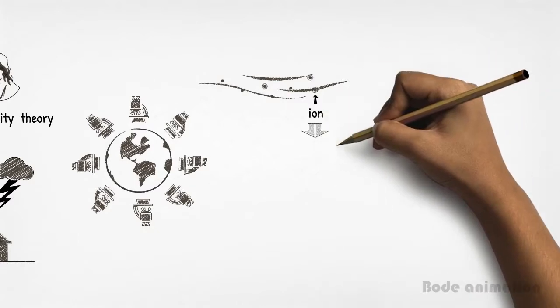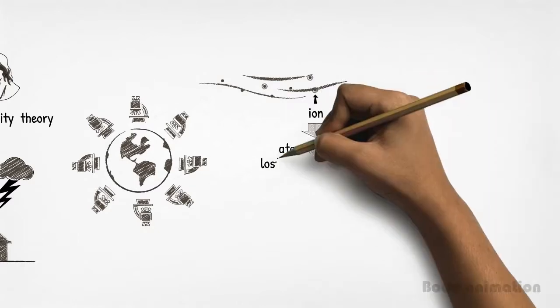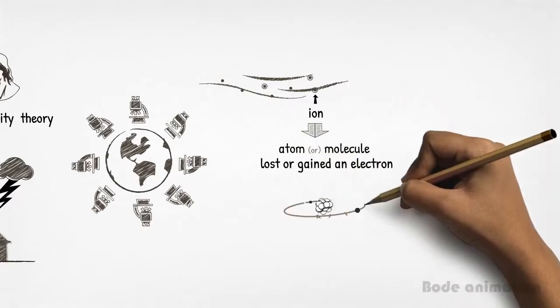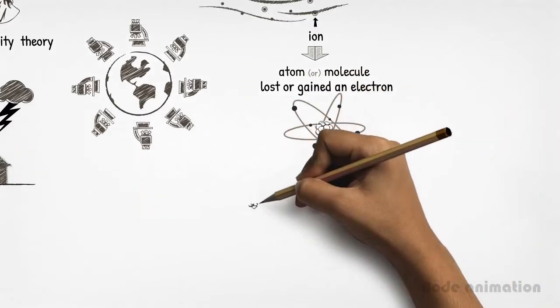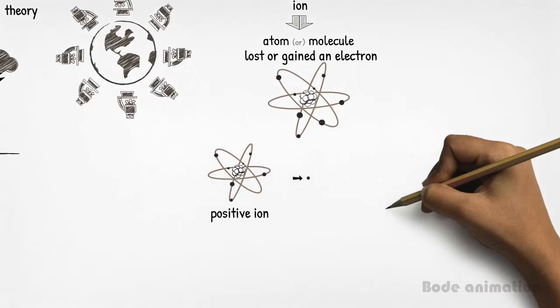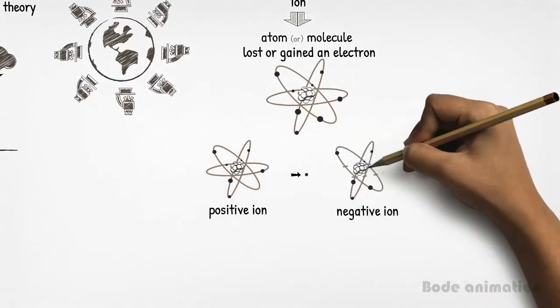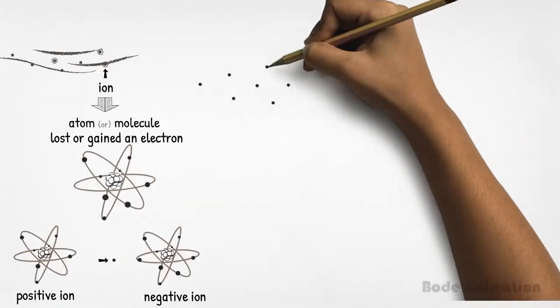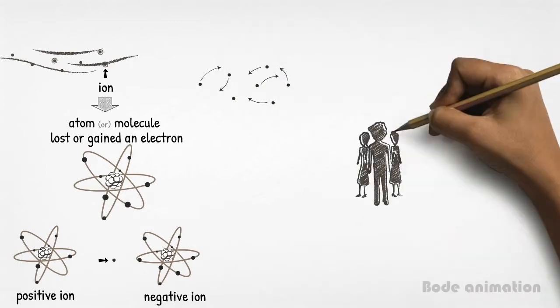Ion is the term for an atom or molecule that has lost or gained an electron. A positive ion has lost an electron, while a negative ion has gained one. This exchange of electrons is happening around us all the time,